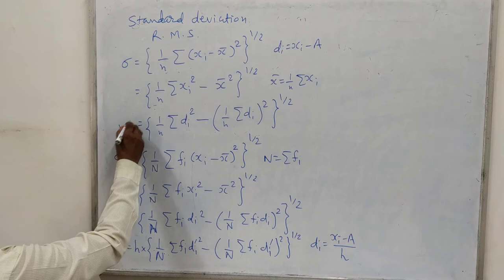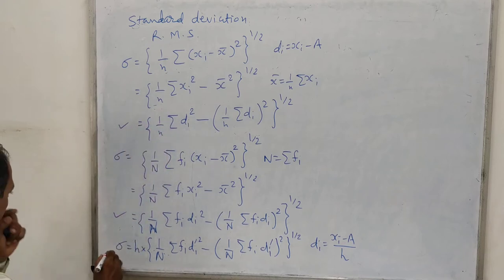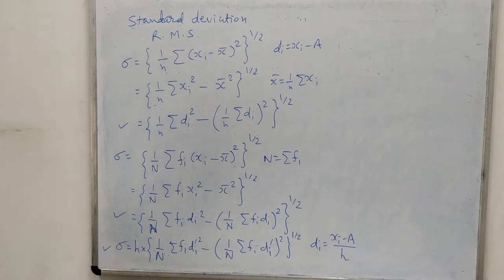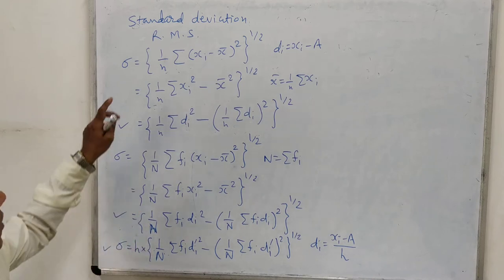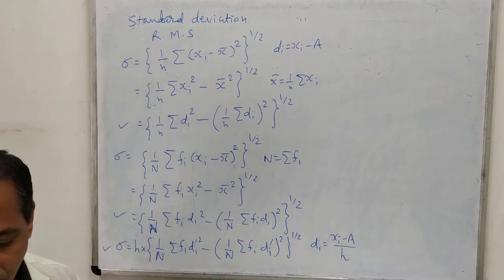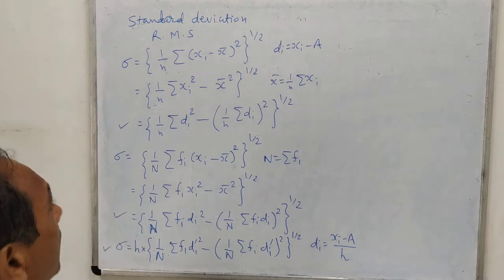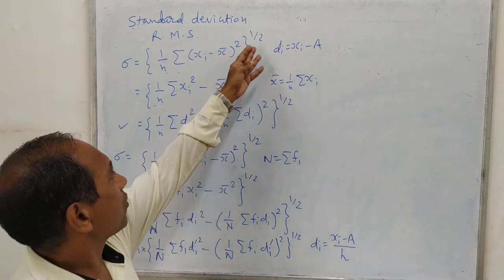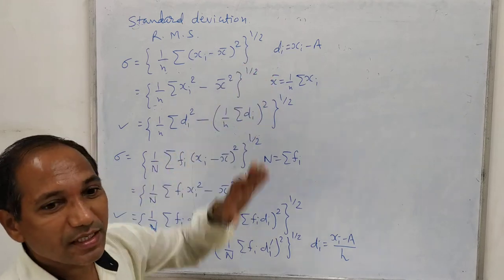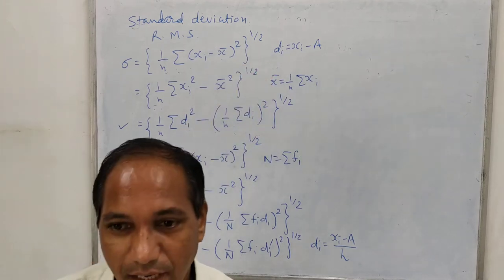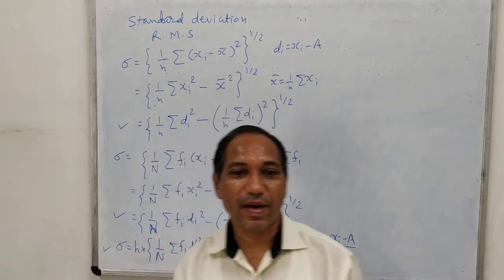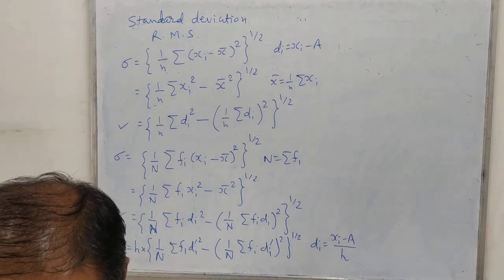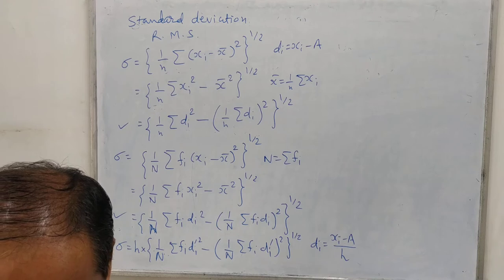These are the formulas to remember, and mostly we will use the formula involving di, because manual calculations make the process faster. These values are known as root mean square values. During finding standard deviation sigma, we normally find sigma square first to avoid writing the square root each time, and then find sigma by taking its square root. We can find standard deviation by using the appropriate formulas.